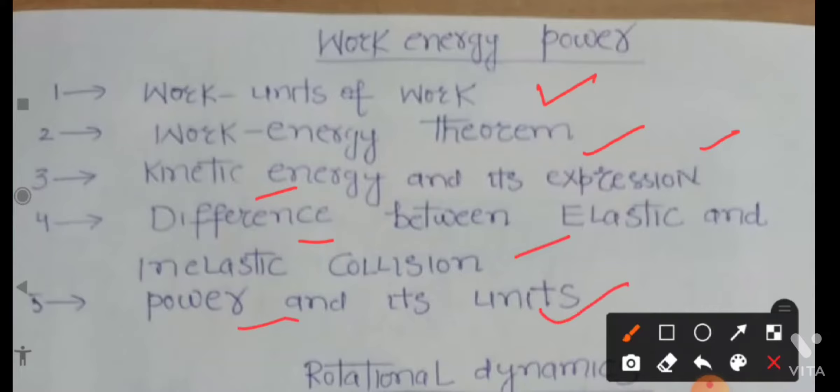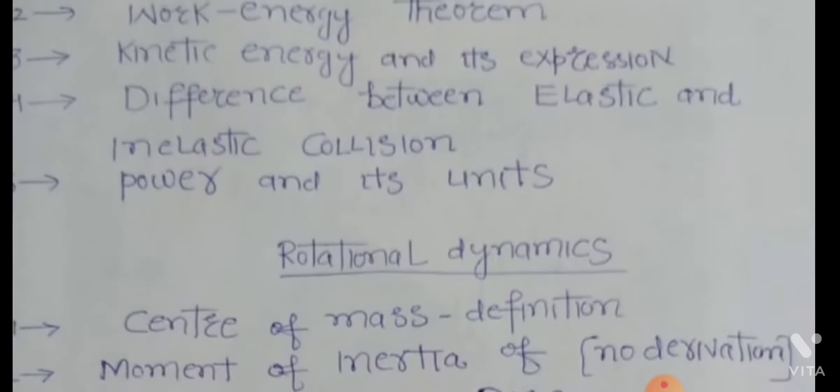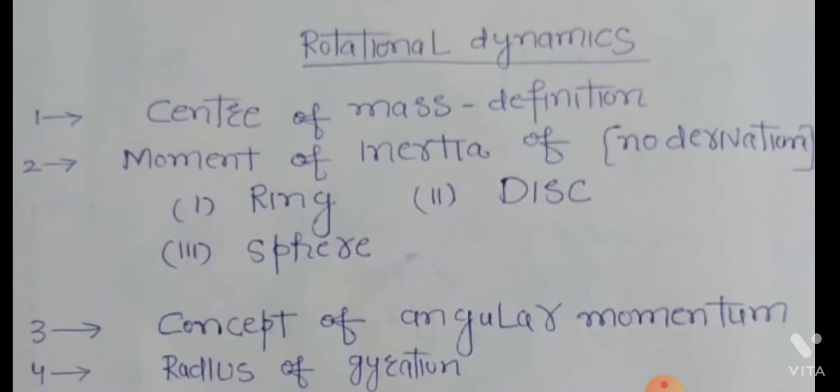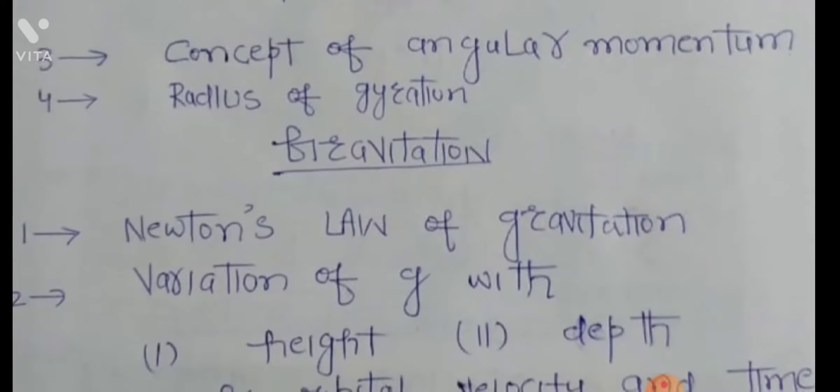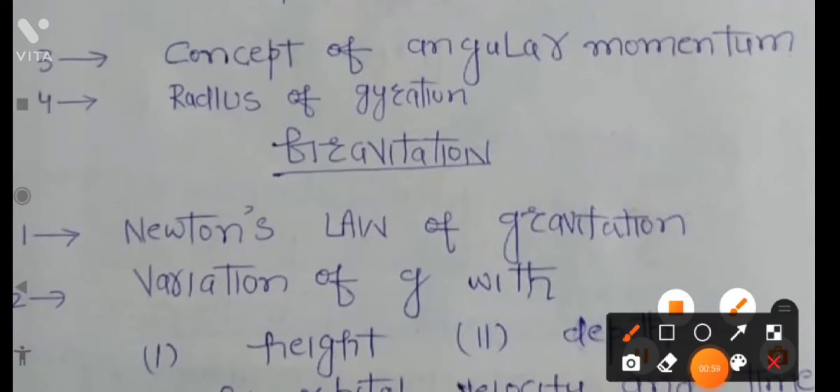Then rotational dynamics: center of mass definition, moment of inertia, no derivation. Ring, disc, and sphere. Then concept of angular momentum, radius of gyration. Then gravitation, Newton's law of gravitation.